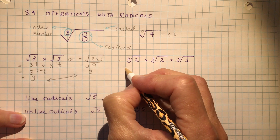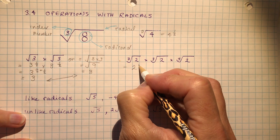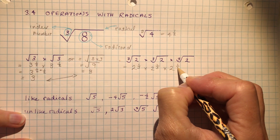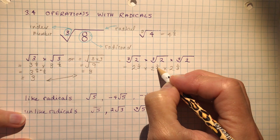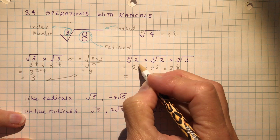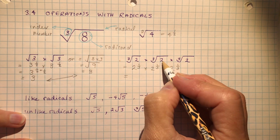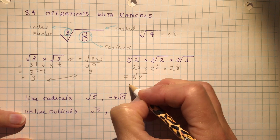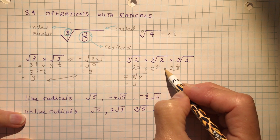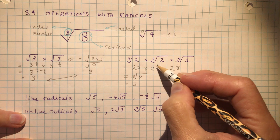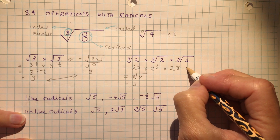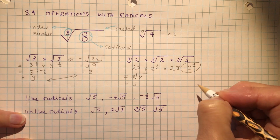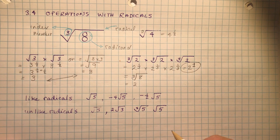The same thing applies here. Let's say I had the cubed root of two, three times. That's two to the one-third times two to the one-third times two to the one-third. Two times two times two is eight, so we're looking for the cube root of eight, which is two. Or using exponents: two to the power of one-third plus one-third plus one-third equals two to the power of one.